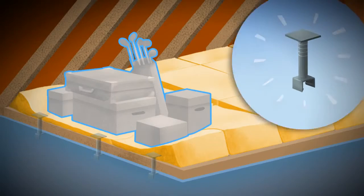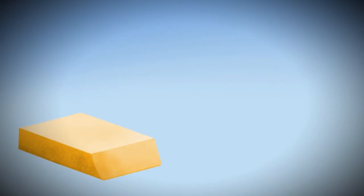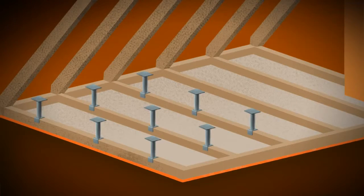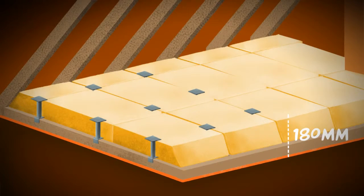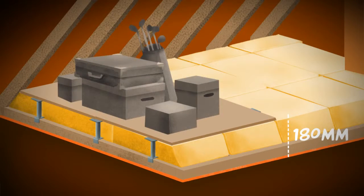Loft lifters solve this problem. They allow you to insulate and keep your storage space. By screwing them into the trusses, you get 180mm of extra insulation. Fit flooring board on top and you keep your storage space.